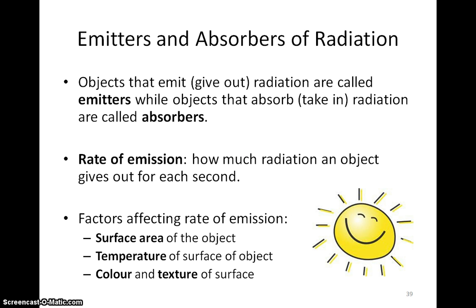Objects that emit radiation are called emitters, while objects that absorb radiation are called absorbers. When we talk about the rate of emission, we are talking about how much radiation an object gives up in one second. There are three factors that will affect the rate of emission, which I will go through in the remaining part of this video.